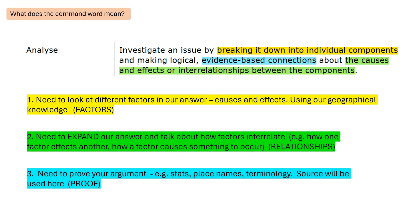The last bit — the blue bit — says evidence-based connections, and all we need to remember here is that we need to prove our argument. We're talking about factors, we're saying how they're related, and we're proving it. We are a lawyer — we have proof to back up our statements and our argument. We can do this by using the source, using stats and place names, but also terminology. We can also bring in wider knowledge, but most of the evidence is going to come from the source provided to us in the exam.